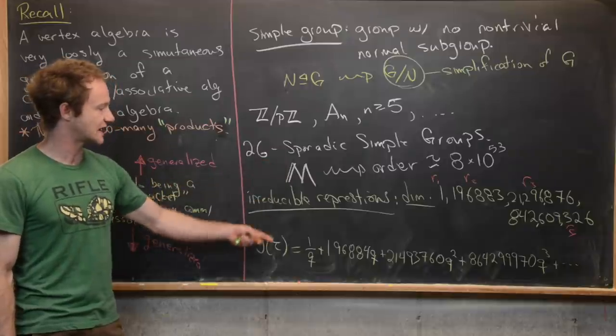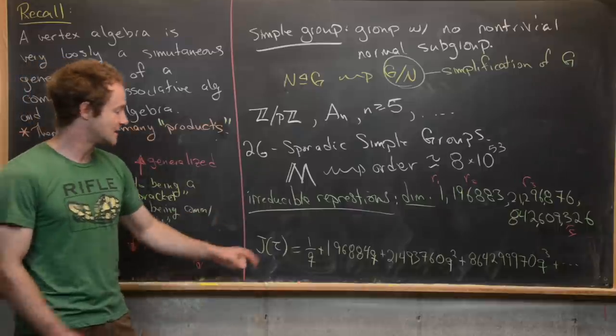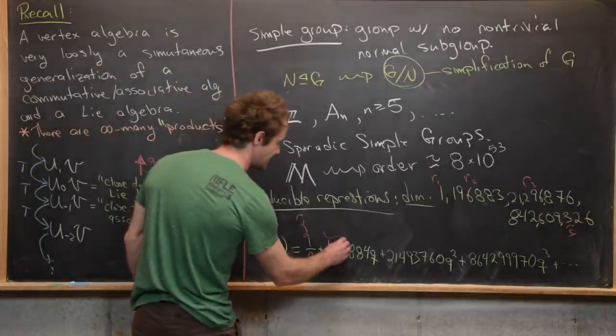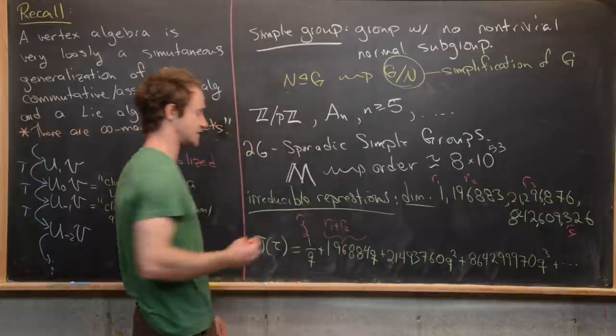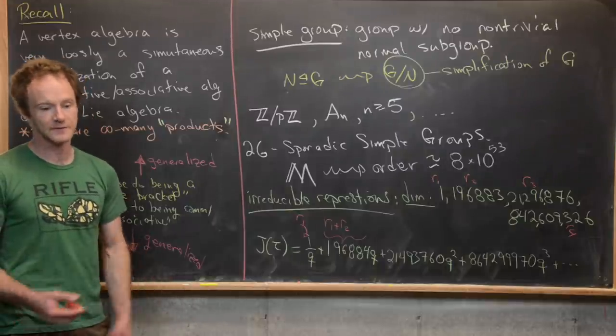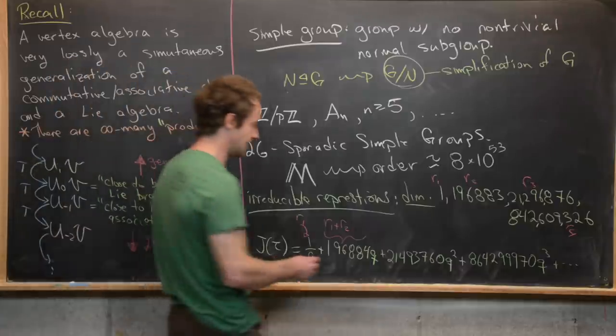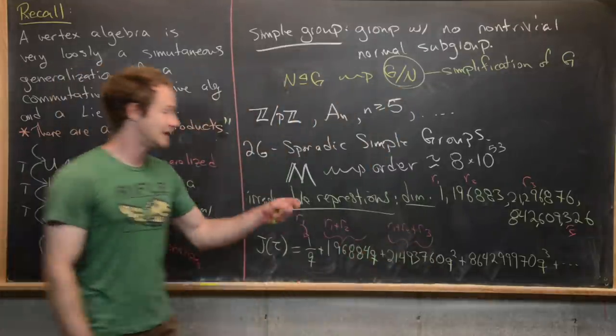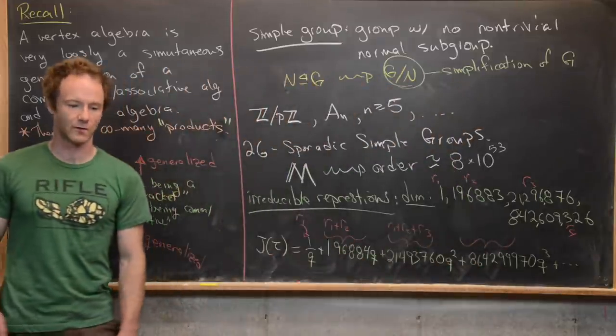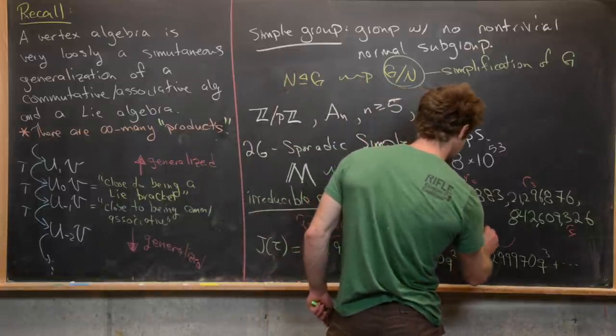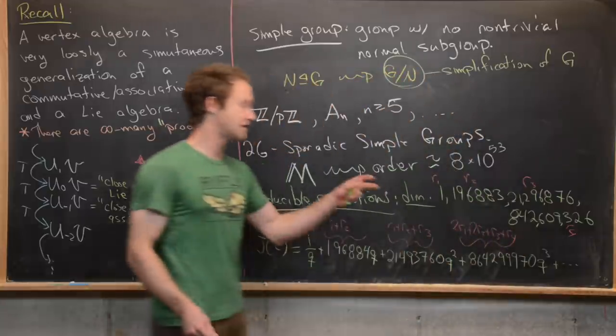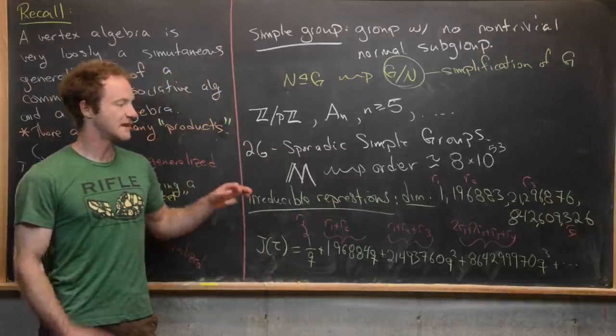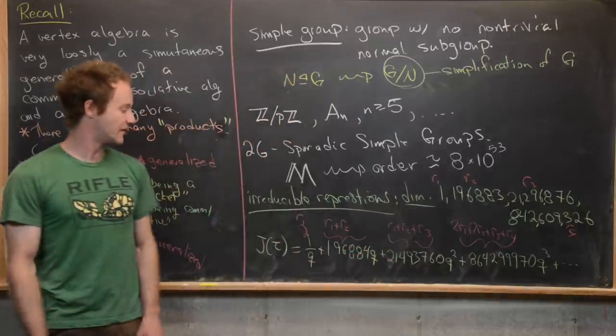Now, it doesn't look like there's much link between the monster group in this J function yet. But if we notice that the coefficient of this thing is one, which is R₁, then we can notice that the coefficient of this thing is R₁ plus R₂. Notice that's one more than 196,883. So that's like a trivial thing. And then the next one is going to be the sum of the first three, so R₁ plus R₂ plus R₃. And then finally, this next one, it's not quite the sum of the first four, but it's going to be two times the first one plus two times the second one plus R₃ plus R₄. So there is some kind of way to combine the representations or the dimension of the representations of the monster group in a linear way that you can get the coefficients of this J function.